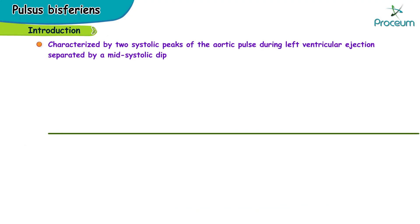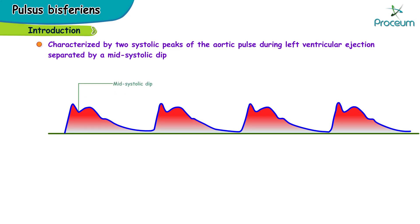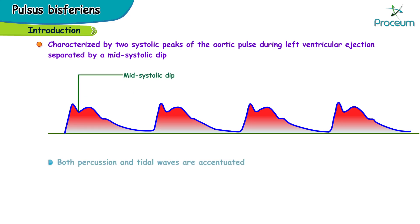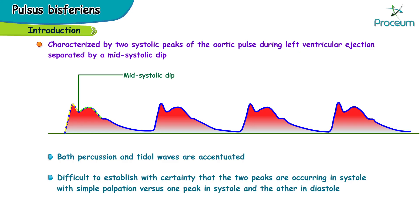Pulsus bisferiens is characterized by two systolic peaks of the aortic pulse during left ventricular ejection, separated by a mid-systolic dip. Both percussion and tidal waves are accentuated. It is difficult to establish with certainty that the two peaks are occurring in systole with simple palpation versus one peak in systole and the other in diastole.